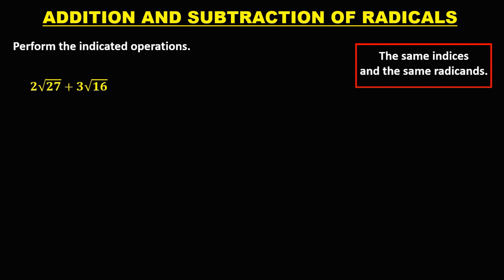For this next given, since the indexes are the same but the radicands are different, we need to rewrite the expression first. So √27 becomes √(9 × 3), and then plus 3 times √16. The square root of 16 is 4, because 4 times 4 is 16. Then simplify: we have 2 times the square root of 9.